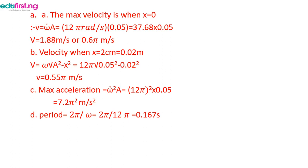For the velocity when the particle is 2 cm from the equilibrium, we use v equals omega times the square root of a squared minus x squared. With a equals 0.05 m and x equals 0.02 m, and omega equals 12 pi, the velocity equals 0.55 pi m/s, which you can convert by multiplying by 3.14.